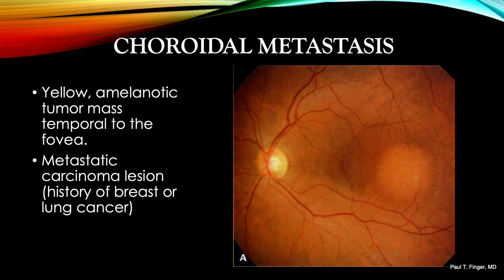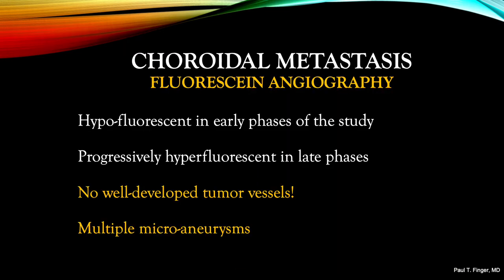The eye cancer specialist rarely sees formed blood vessels on the surface of the tumor. I have noted that choroidal metastasis tend to grow more quickly than other cancers. Comparative photographic imaging is thus likely to reveal change over weeks rather than months. It appears that this rapid growth does not allow the time necessary to form large, formed, and thus visible tumor vessels.